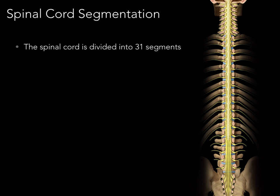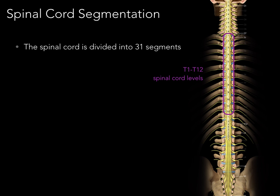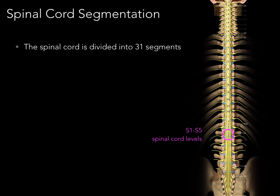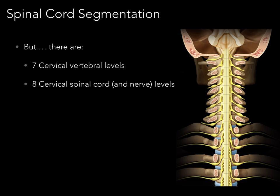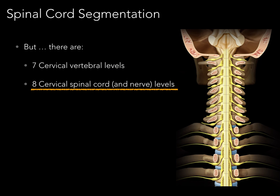The spinal cord is divided into 31 segments. There are eight cervical spinal cord segments, 12 thoracic spinal cord segments, five lumbar spinal cord segments, five sacral spinal cord segments, and one tiny coccygeal spinal cord segment. The spinal cord is divided into 31 segments, but there are seven cervical vertebral levels, and there are eight cervical spinal cord and spinal nerve levels.